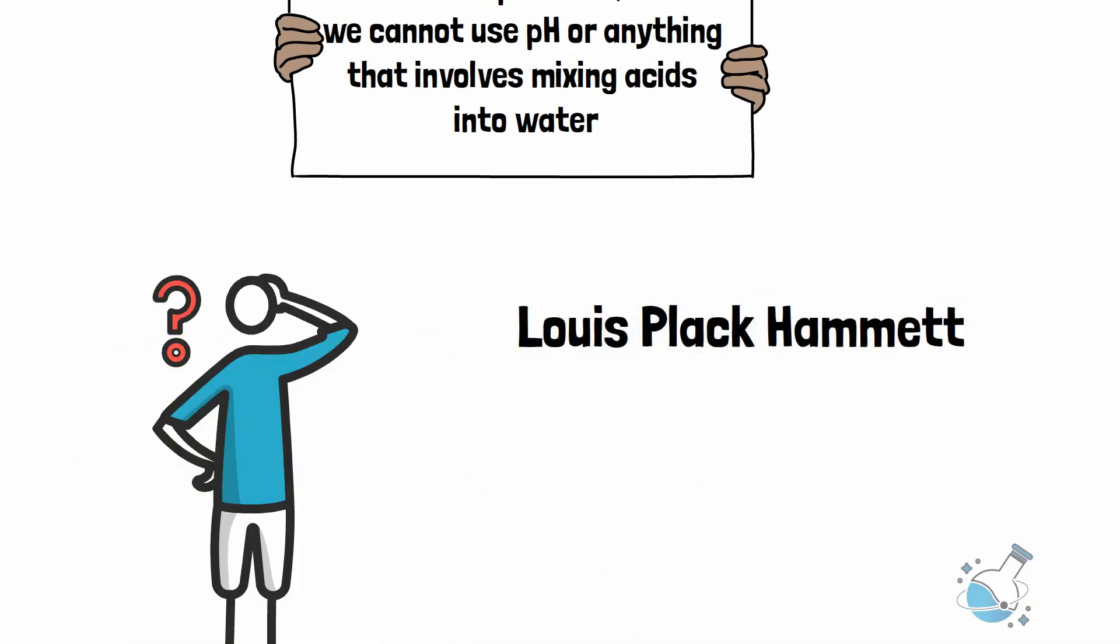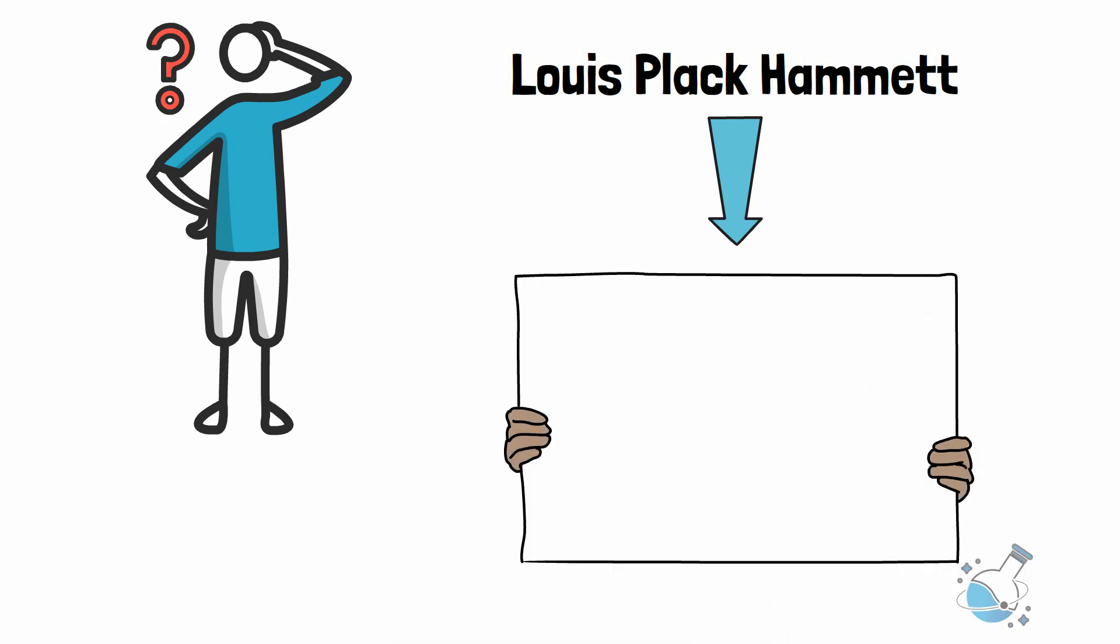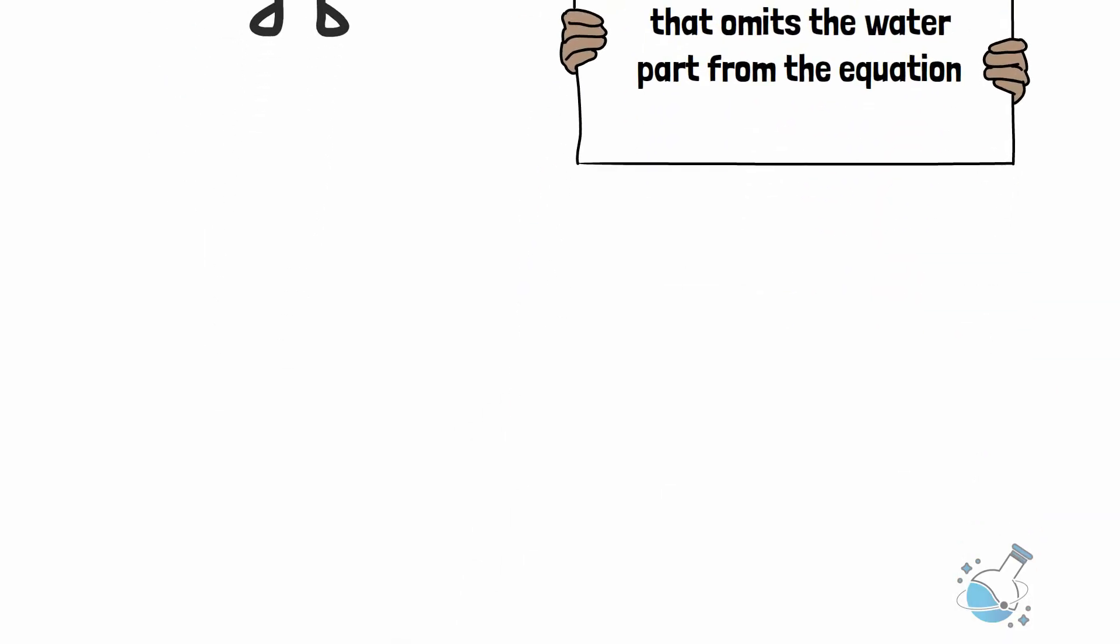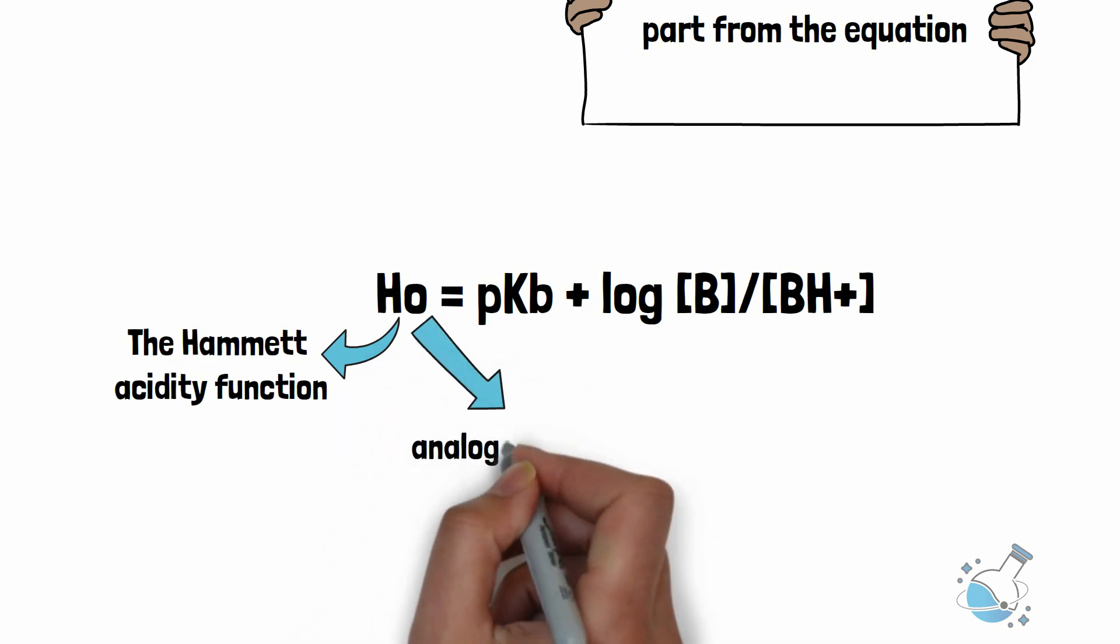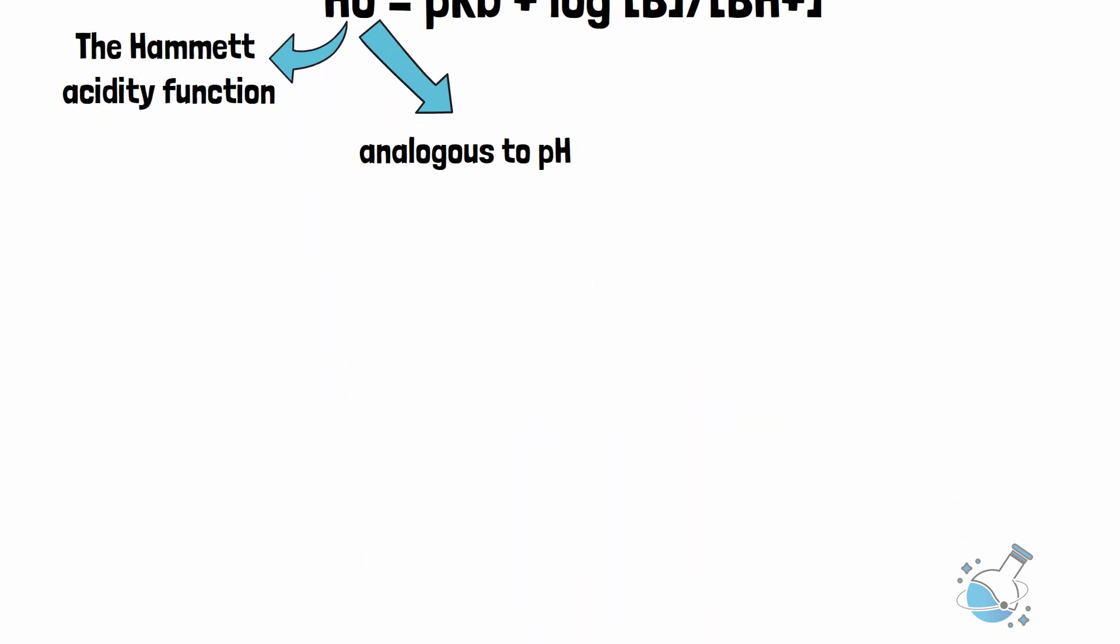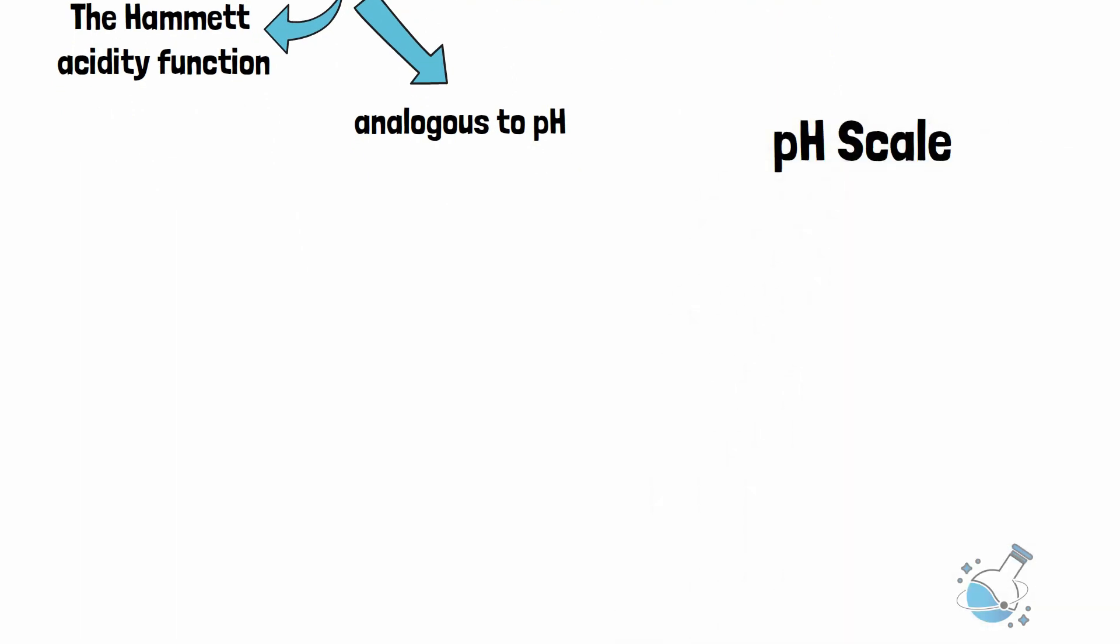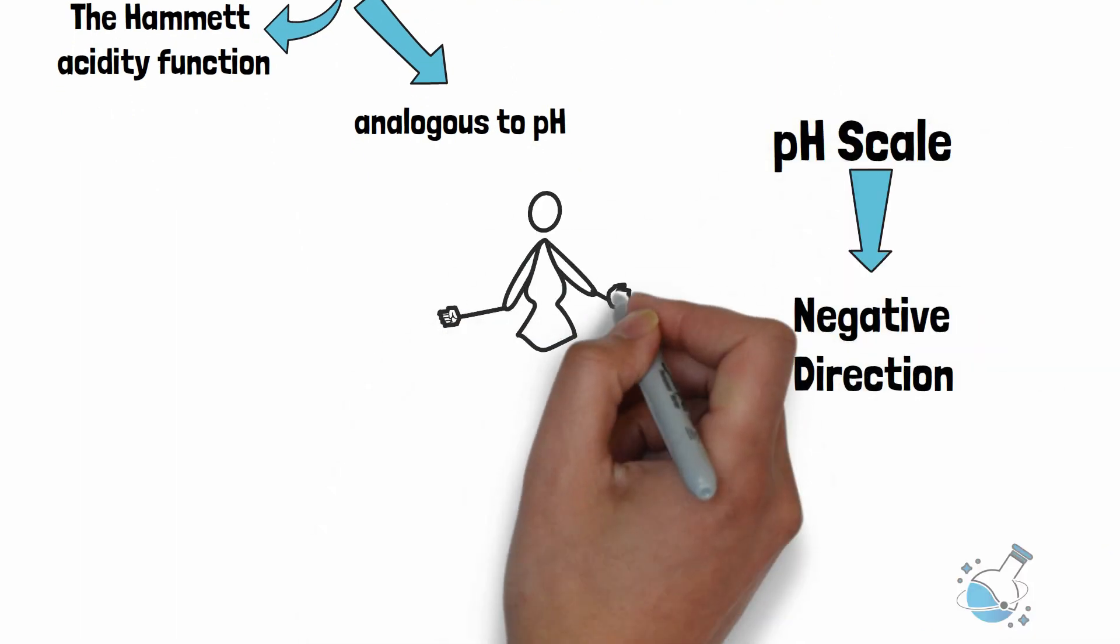This was answered by Louis Plaque Hammond. He proposed the use of an acidity function that omits the water part from the equation. The acidity function is called the Hammond acidity function. It is denoted by H0. H0 is analogous to pH. And it is as if the pH scale has been extended to the negative direction. Finally, the problem of units was solved. And now, we can discuss superacid.